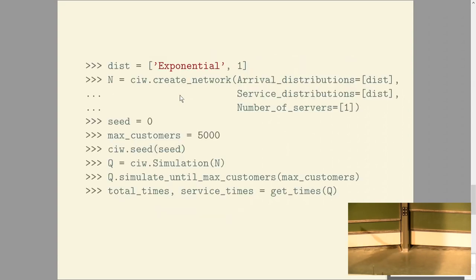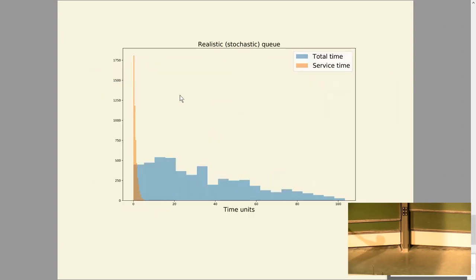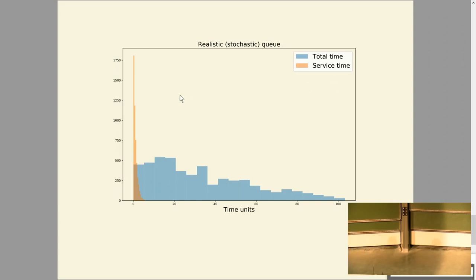Here's how you do it with an exponential distribution. In a very simple system, now some people are spending more than a hundred time units in our queuing system. And that's why we need to understand queues and simulate queues and not just use averages. Thank you.